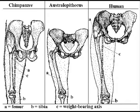Australopithecus has the same angled leg bones and a pelvis that is not as tall as a chimp's, but does flare out slightly at the top like a chimp pelvis. So they were bipedal and had some bone structure similar to humans. Is there anything that connects them to apes though?